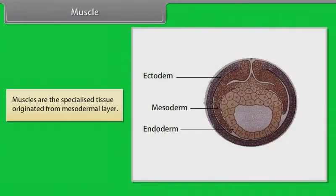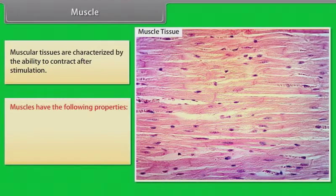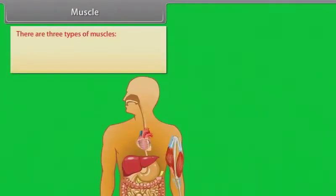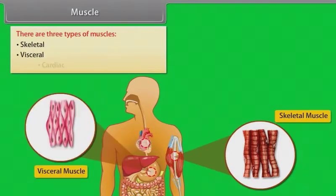Muscles are specialized tissues originated from the mesodermal layer. Muscular tissues are characterized by the ability to contract after stimulation. Muscles have the following properties: excitability, contractility, extensibility, and elasticity. There are three types of muscles: skeletal, visceral, and cardiac.